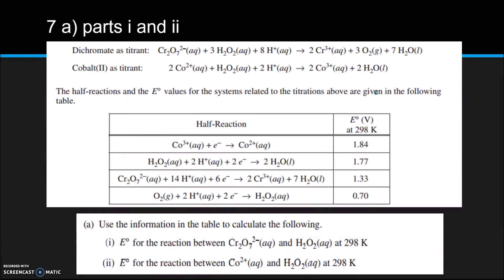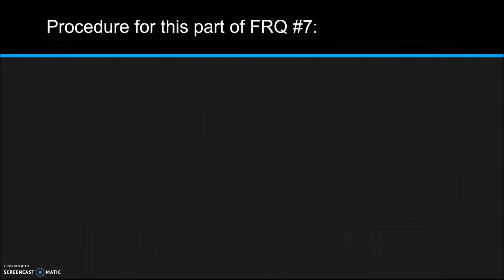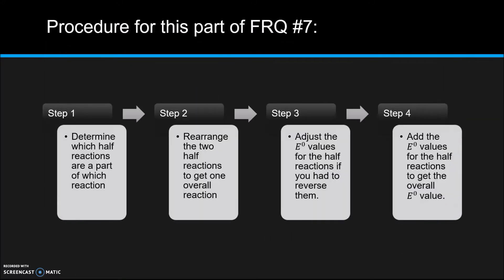So parts 1 and 2 in part A of this question ask you to determine the E⁰ for the reactions. The first part asks for the E⁰ for the reaction between dichromate and H₂O₂, and the second one asks for Co²⁺ and H₂O₂. So I have outlined a procedure on what we can do to solve this question.